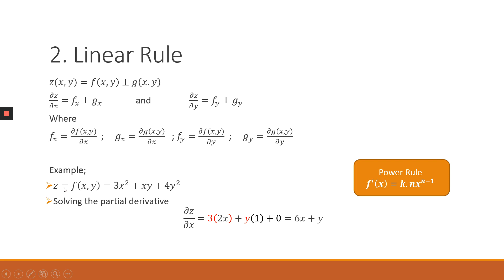Solving for the partial derivative of z with respect to x: using the power rule on 3x², the constant is 3 and we differentiate x², which gives 2x. For the next element xy, the constant when differentiating with respect to x is y, and the derivative of x is 1. For 4y², when differentiating with respect to x, 4y² is the constant, and the derivative of a constant is 0. Expanding and simplifying, the answer is 6x + y.